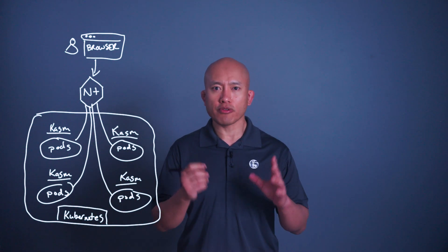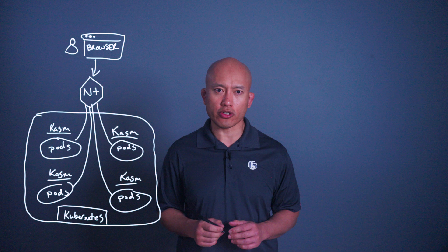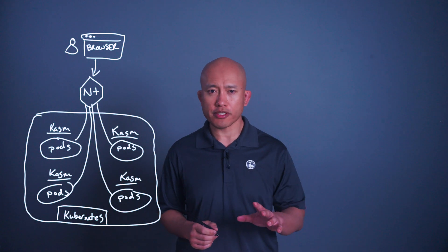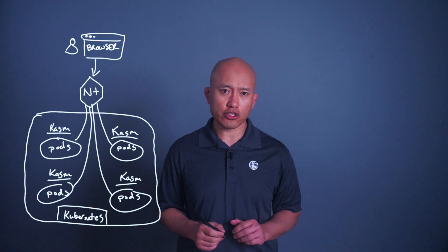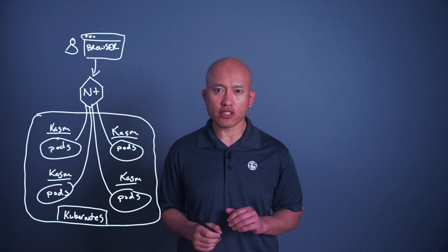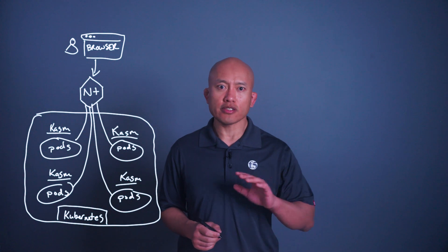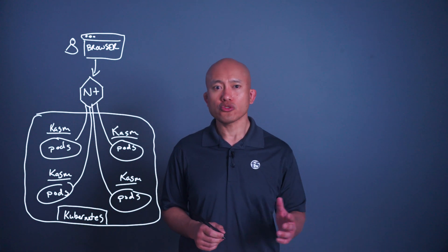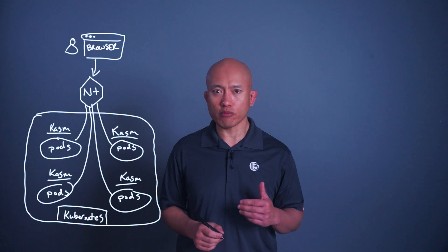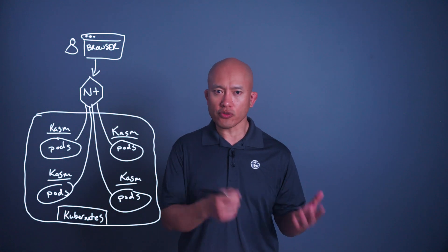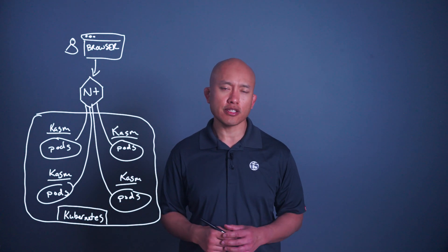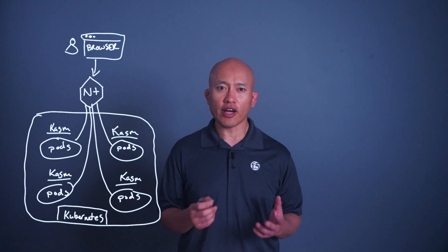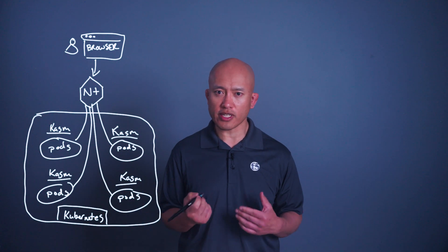To implement, you can use the provided Helm charts to deploy both Chasm Workspaces and the NGINX Ingress Controller into your Kubernetes cluster and define ingress resources that map external URLs to the internal Chasm service endpoints. You can configure TLS certificates for HTTPS access and fine-tune annotations for features like session affinity or IP whitelisting as examples.